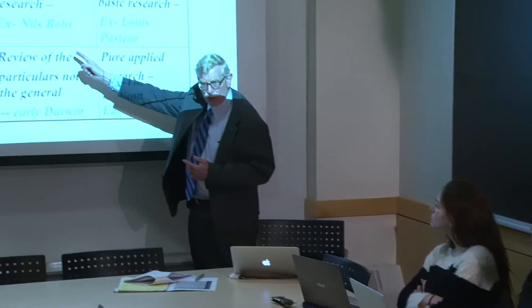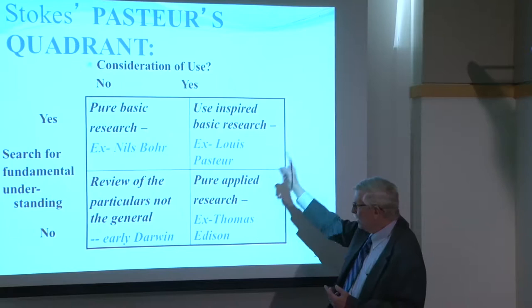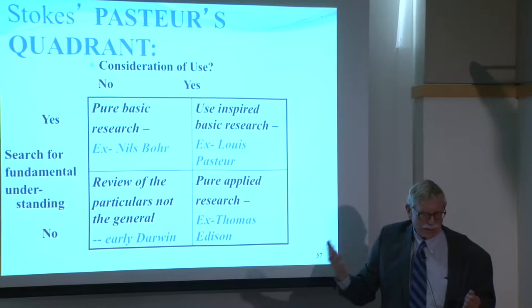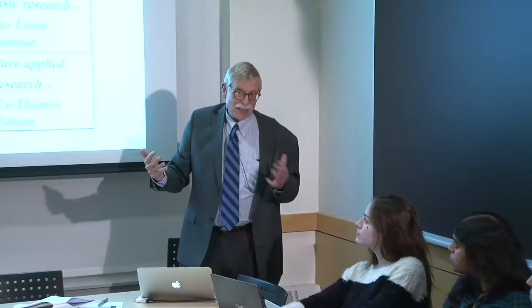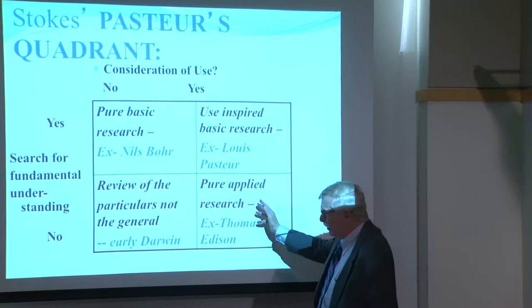Stokes doesn't want to eliminate this quadrant — he knows how productive it is — but he sure wants to add consideration of it. Then there's no search for fundamental understanding but consideration of use: in here, Stokes puts Thomas Edison and the light bulb. Edison doesn't really care about physics; he just cares about the light bulb. But it turns out to be more complicated — Edison has got scientists in that Menlo Park idea factory, and there is something called the Edison effect, which helps explain electron theory. So there is science evolving out of the technology they're pursuing — it's a two-way street.